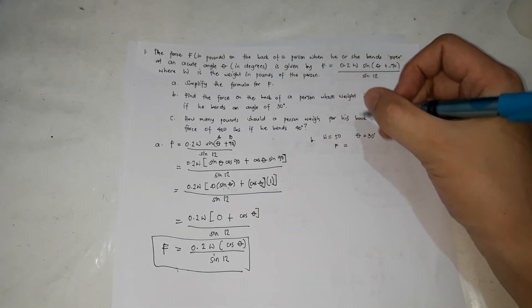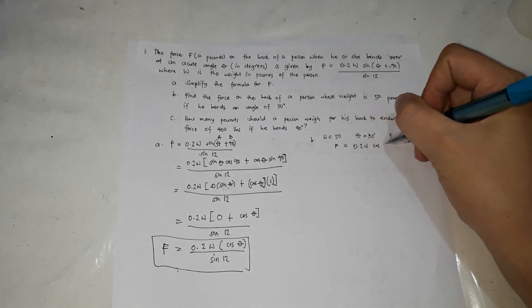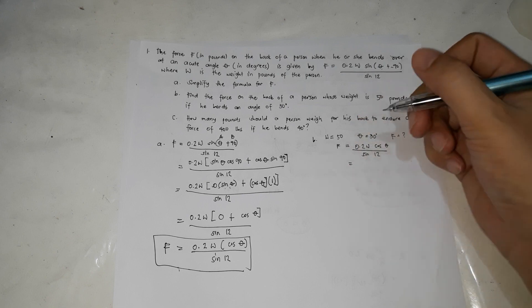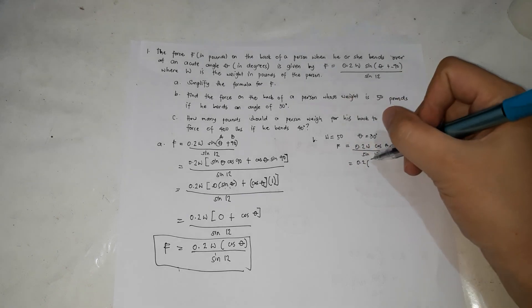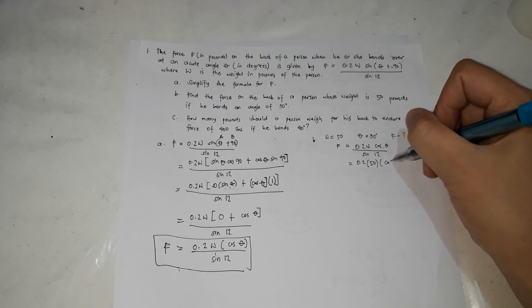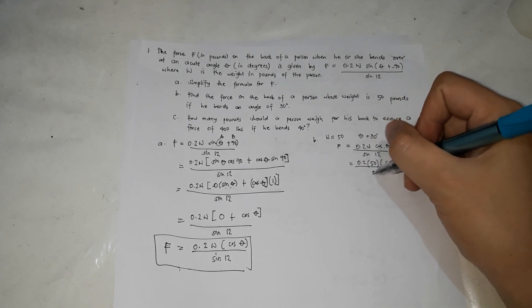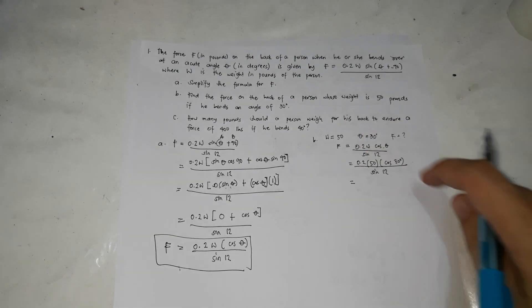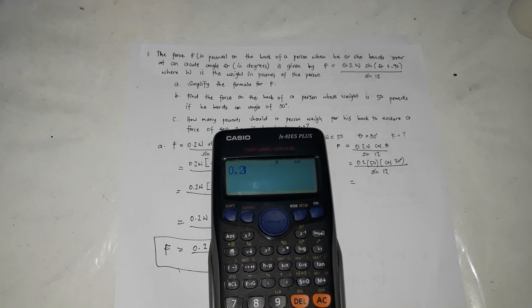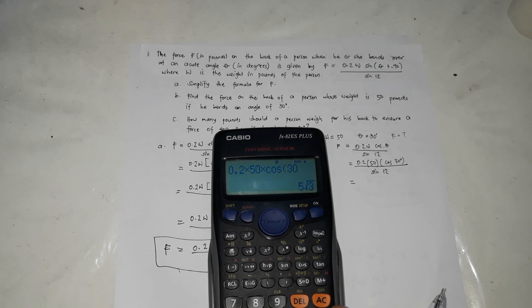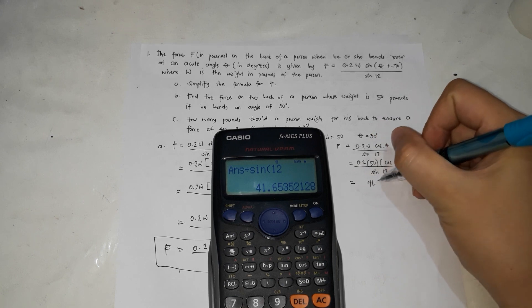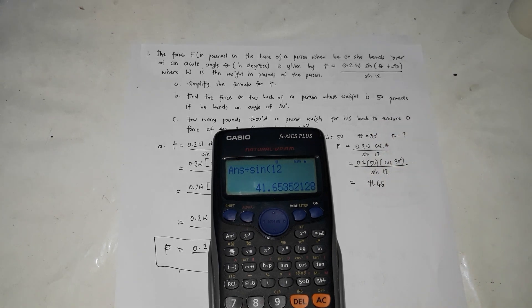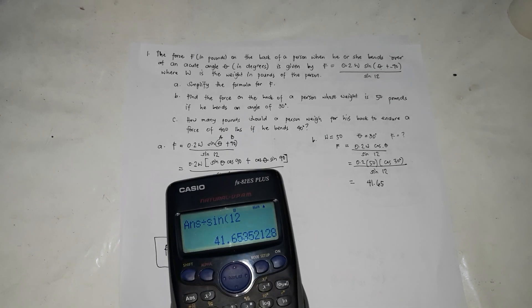The formula for the force is F equals 0.2W cosine theta over sine 12, which equals 0.2 times 50 times cosine 30 degrees over sine 12. We can type this directly in the calculator: 0.2 times 50 times cosine 30 equals, divided by sine 12. The answer is 41.65, so our answer for this one is 41.65.